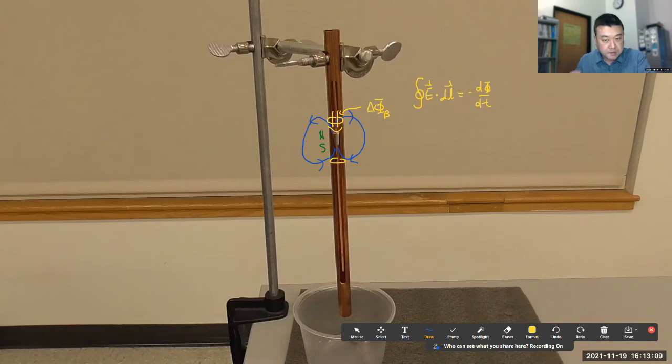So there's a voltage induced around this loop. And Lenz's law, which is referring to this minus sign here, says that you can figure out the direction of the magnetic, the direction of the electric field this way.